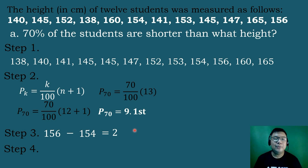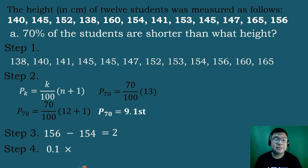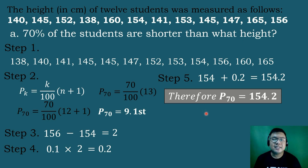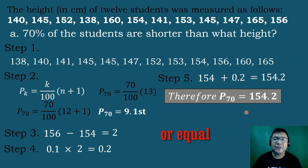For step 4, we multiply the decimal part of the result in step 2 — which is 0.1 — times the result in step 3, which is 2. So 0.1 times 2 equals 0.2. For the last step, we add the result in step 4 to the 9th number: 0.2 plus 154 equals 154.2. Therefore, percentile 70 equals 154.2, meaning 70% of the students are shorter than a height of 154.2 cm.